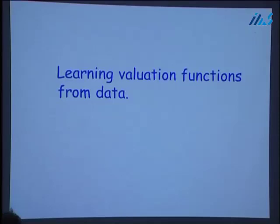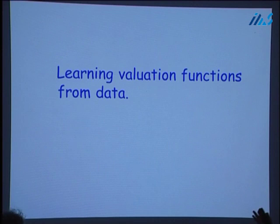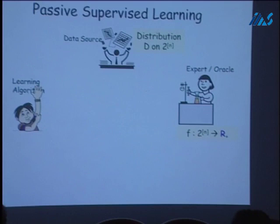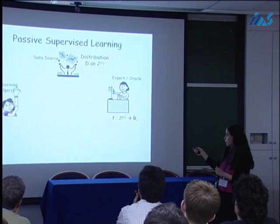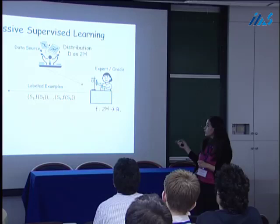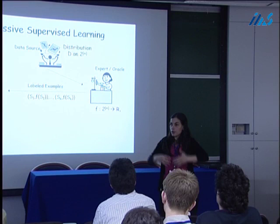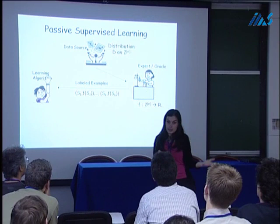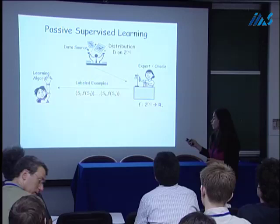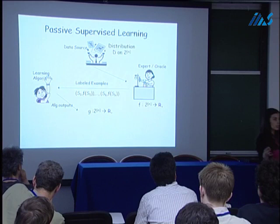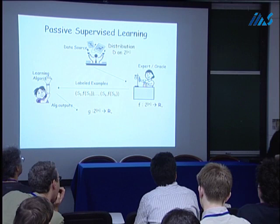In this work, we study the learnability of such valuation functions from data. In particular, we consider a distributional learning model and develop a PAC-style analysis for this scenario. Informally, the learning model is as follows: we assume some source of data — a distribution over unlabeled examples. These examples get labeled according to some fixed but unknown target function, which we think of as being submodular; for example, the valuation function of a customer. These labeled examples are input to a learning algorithm, which outputs a hypothesis function.